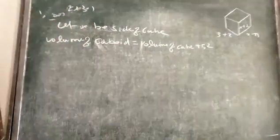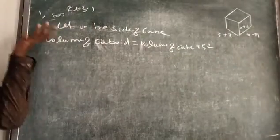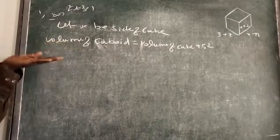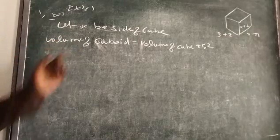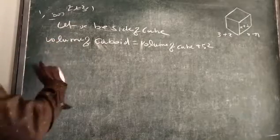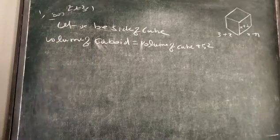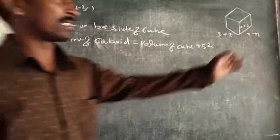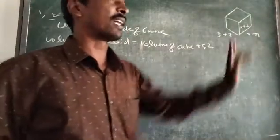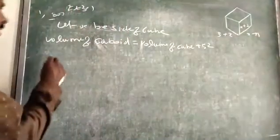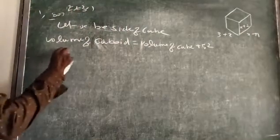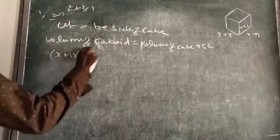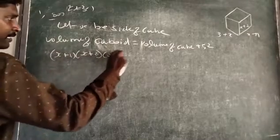So the volume of the cube plus 52 equals the volume of the cuboid. When the cube is increasing on sides one, two, and three — to find the volume of the cuboid, you multiply length, breadth, and height.